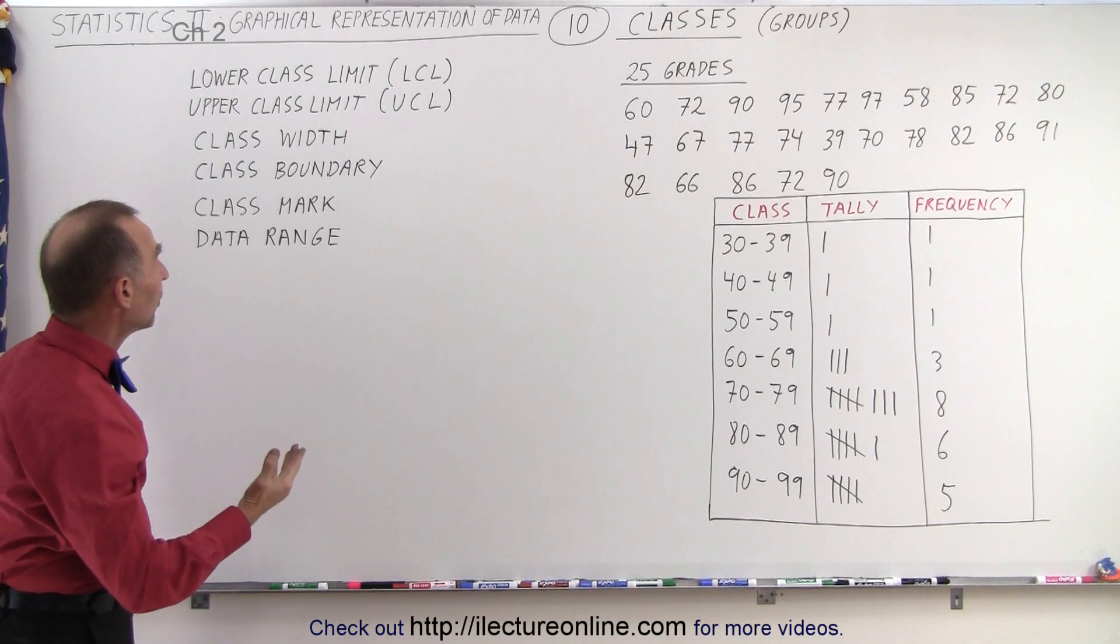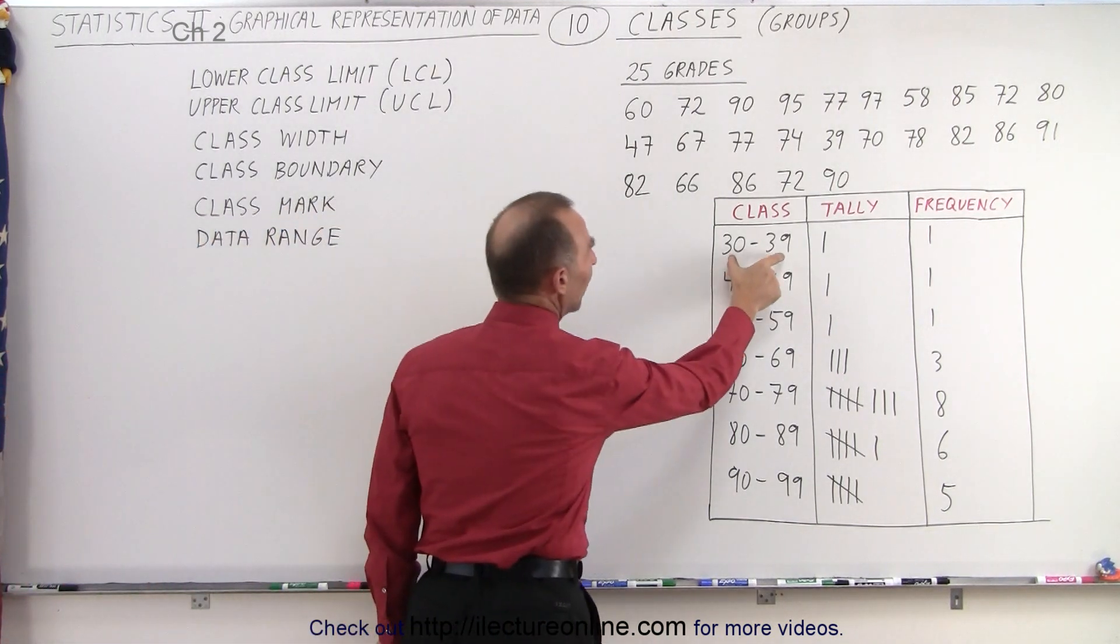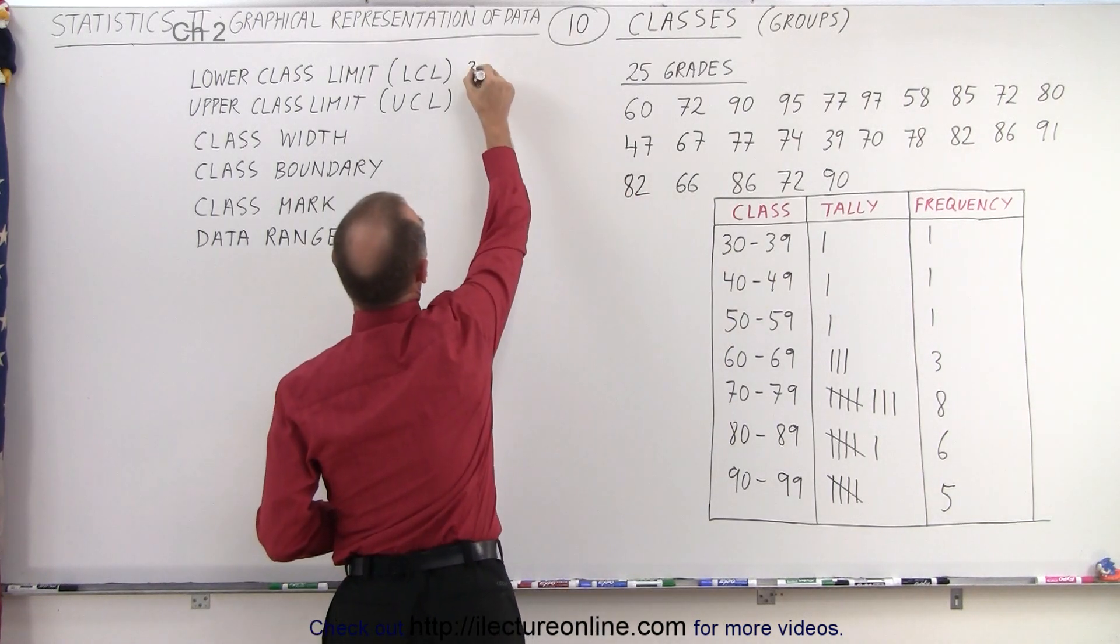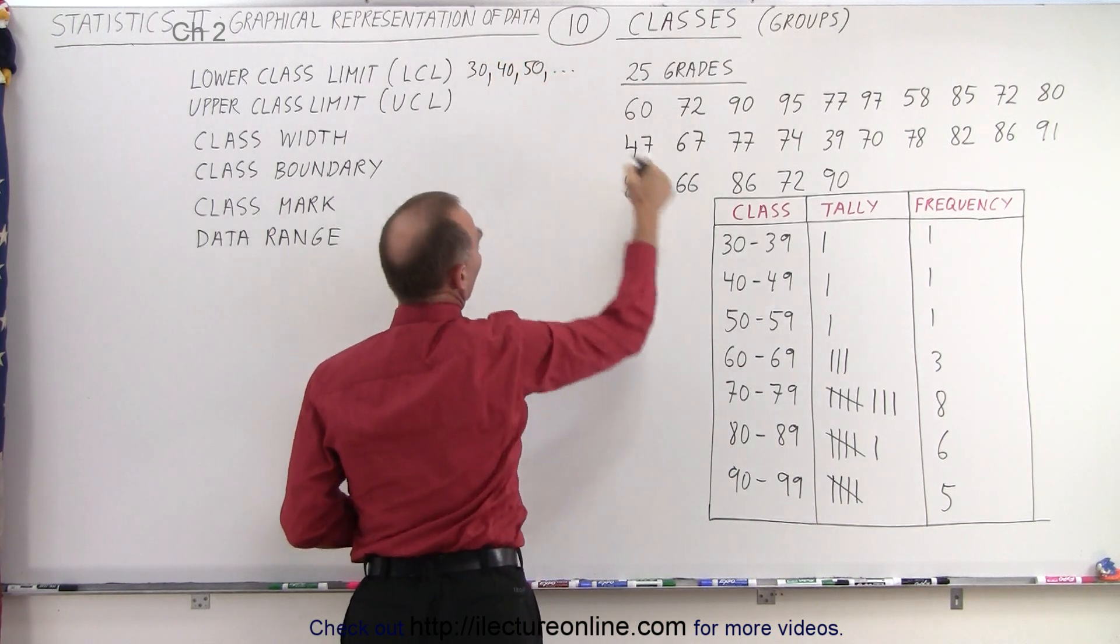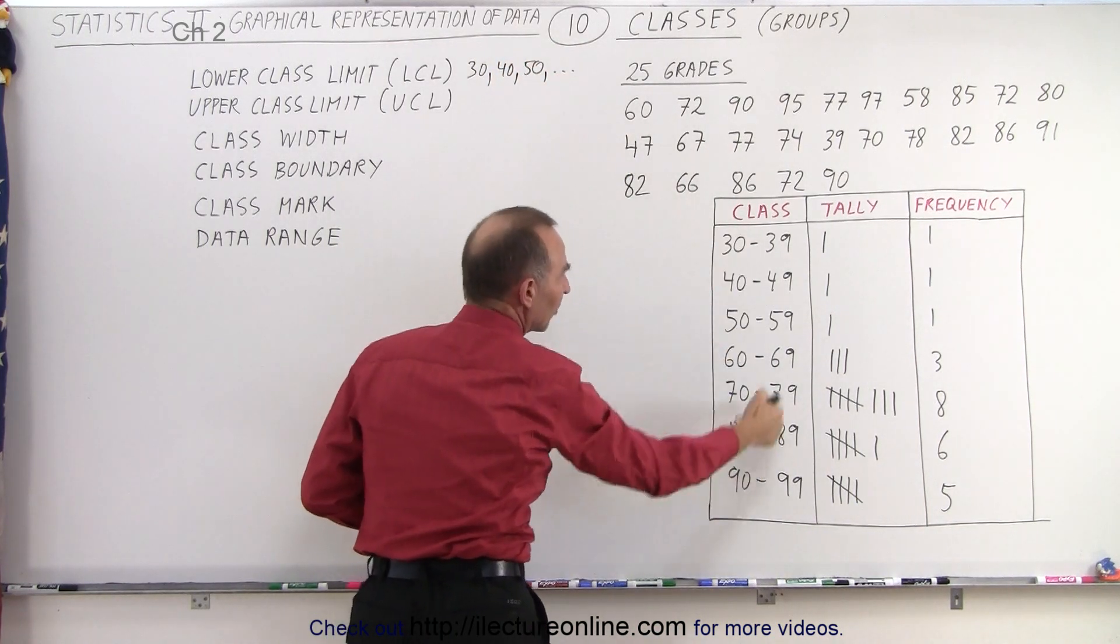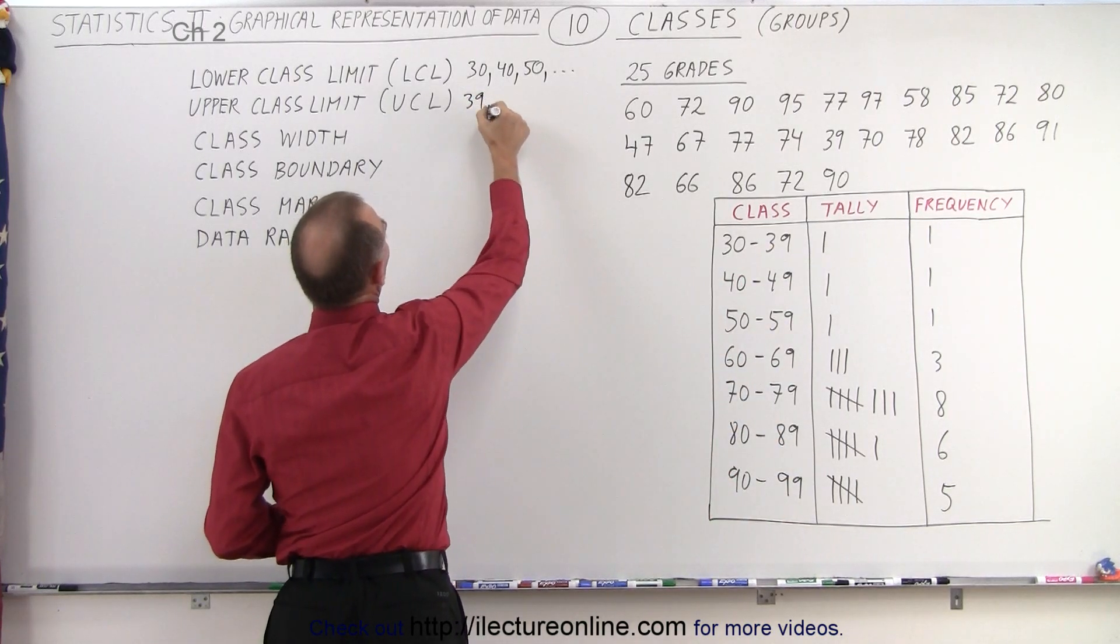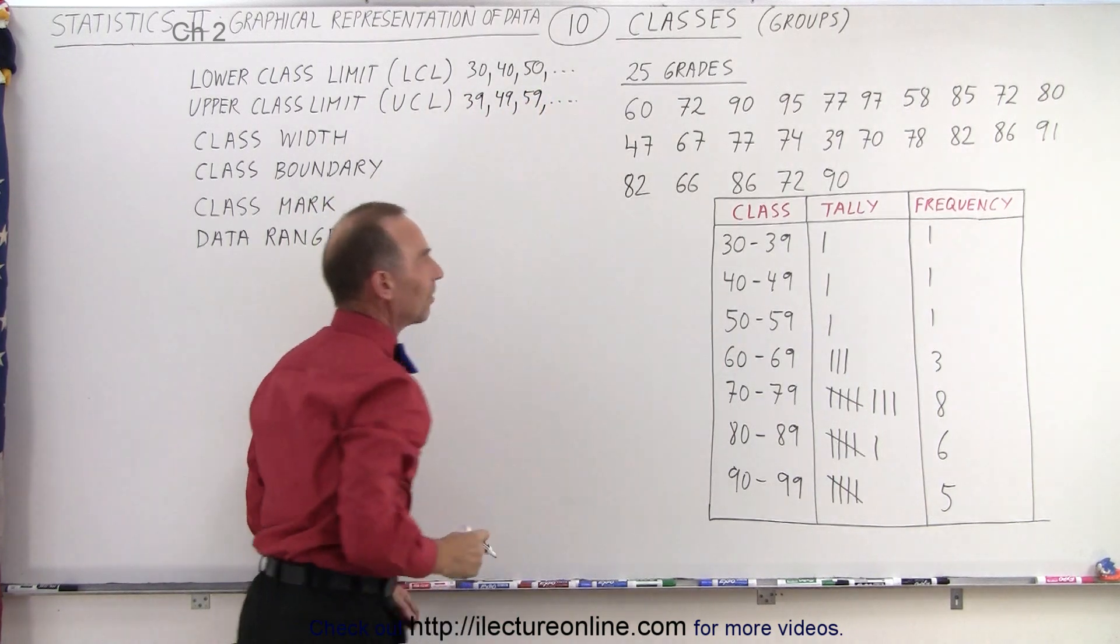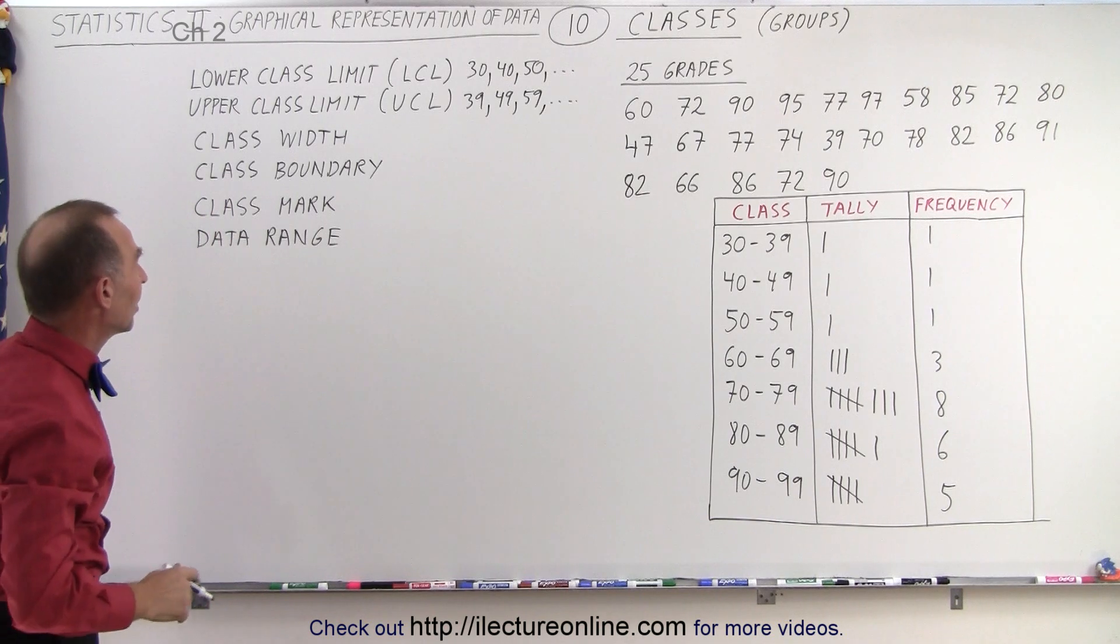Now the upper and lower class limits are simply the highest and lowest value within a class. So in this case all the lower class limits are 30, 40, 50, and so forth. So these are all the lower class limits and these are all the upper class limits. That would be 39, 49, 59, and so forth. So that's how we identify each class with a lower and upper class limit.